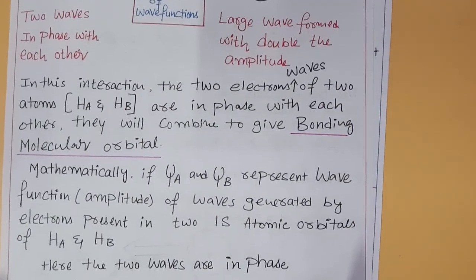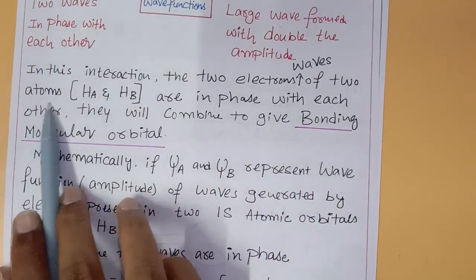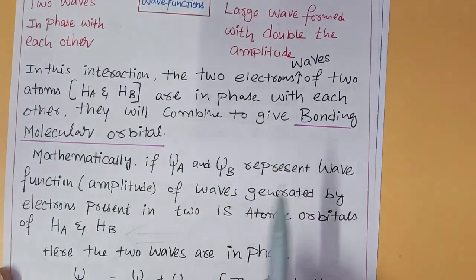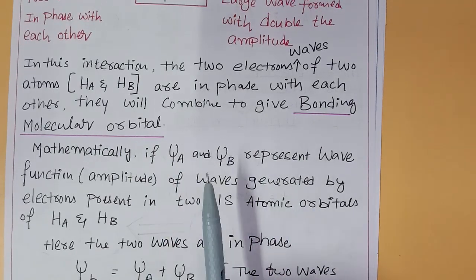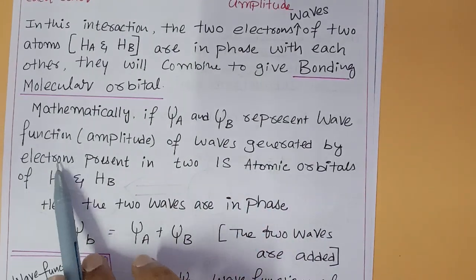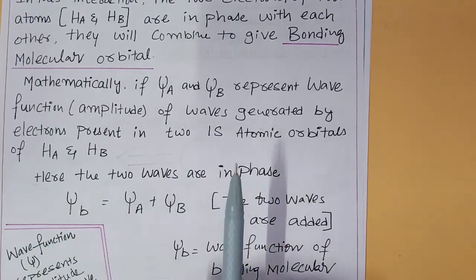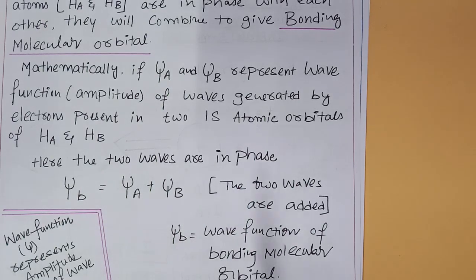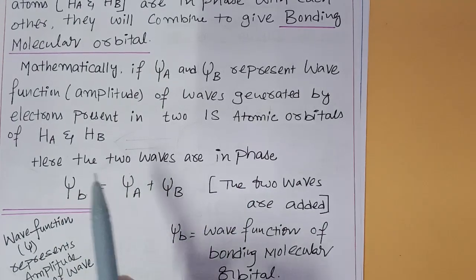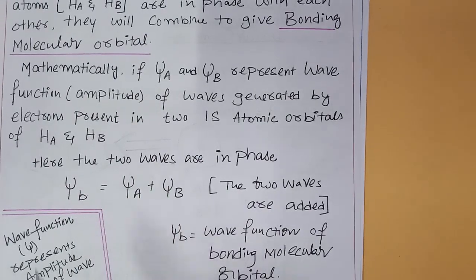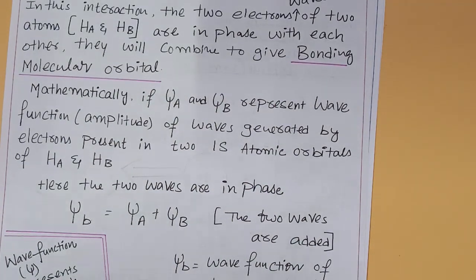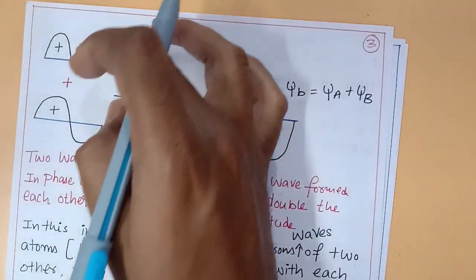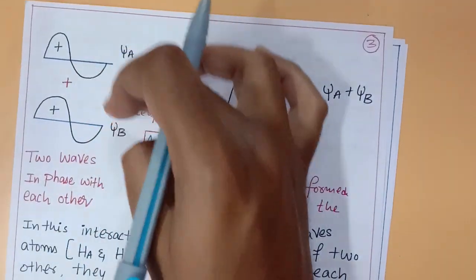In this interaction, the two electron waves of hydrogen atom A and hydrogen atom B are in phase with each other and combine to give the bonding molecular orbital. Mathematically, if ψ_A and ψ_B represent the wave functions of waves generated by electrons in the 1s atomic orbitals of H_A and H_B, since the two waves are in phase, ψ_b = ψ_A + ψ_B.